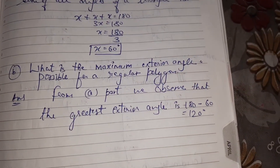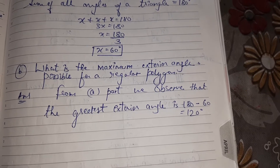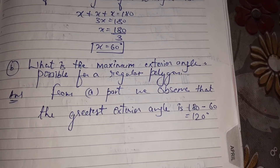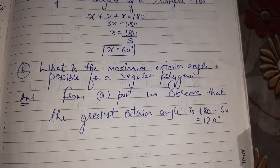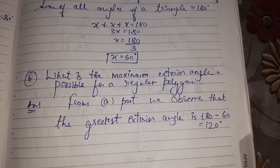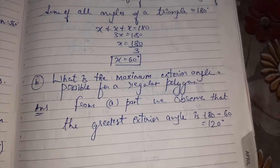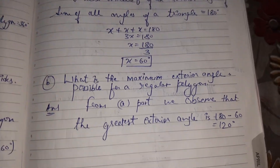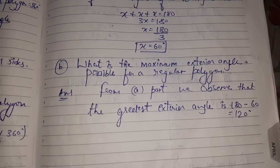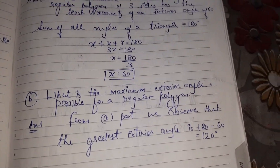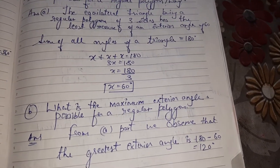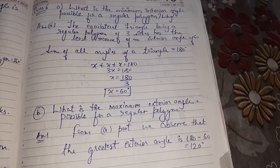For the next part, what is the maximum exterior angle possible for a regular polygon? From the previous part we observed that the greatest exterior angle is 180 minus 60, which equals 120 degrees. Please do this exercise. If you find any problem in any of the questions, just WhatsApp me. God bless you all.